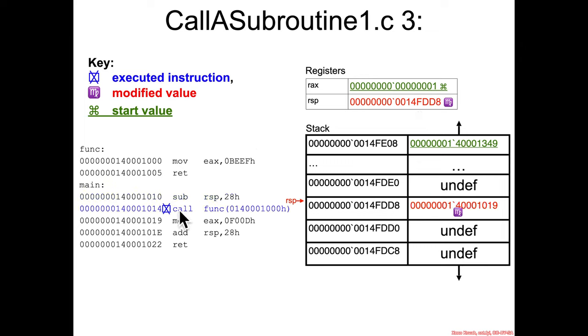Next assembly instruction, call func. And the particular address that func is at is 14000100. And so the side effect of the call assembly instruction we said is that a return address will get placed onto the stack. So what is the return address? 14001019.